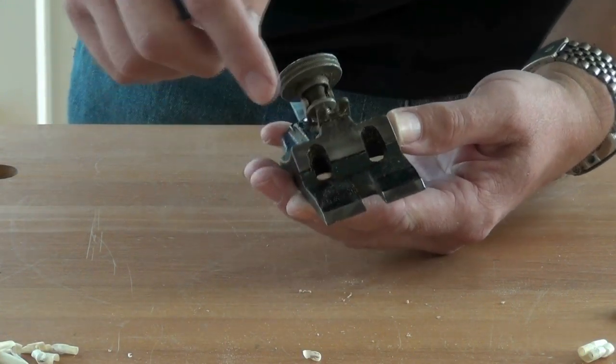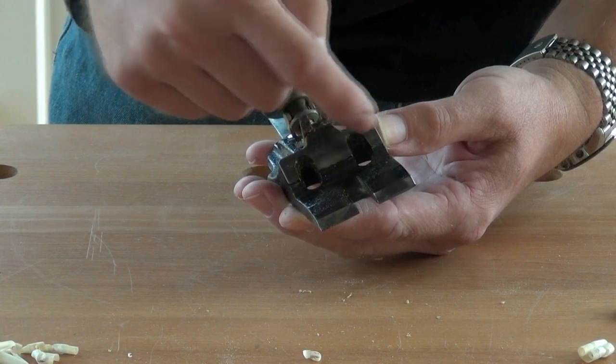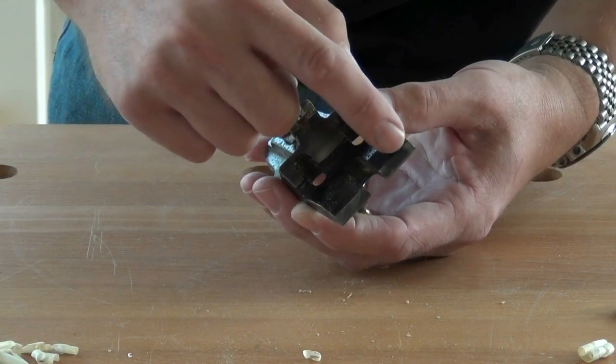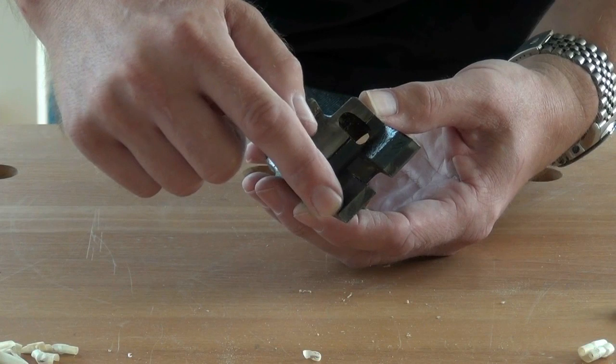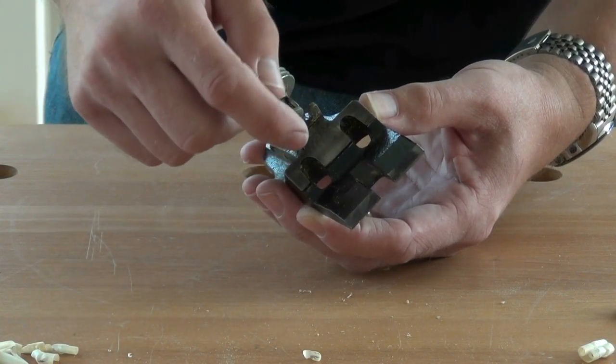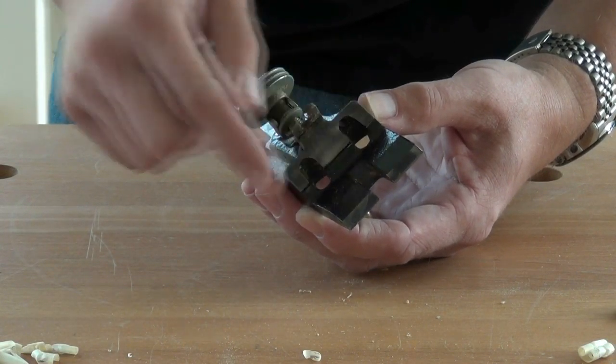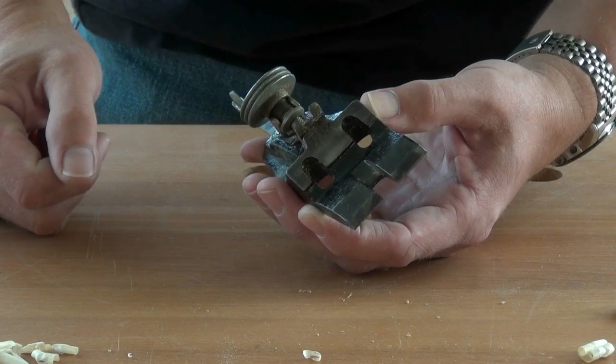The frog is seated on this E-shaped pad and these two straight pads. Again, they're machined in the factory and you can probably improve upon the mating of those surfaces.